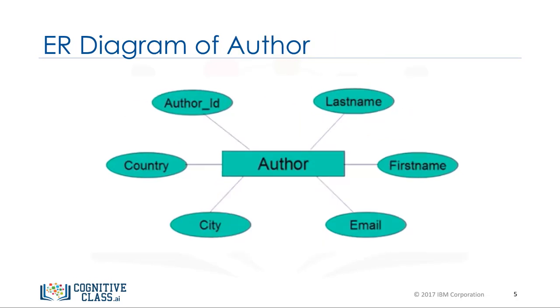For the entity author, the ER diagram would look like this. The entity author has attributes last name, first name, email, city, country, and author ID.